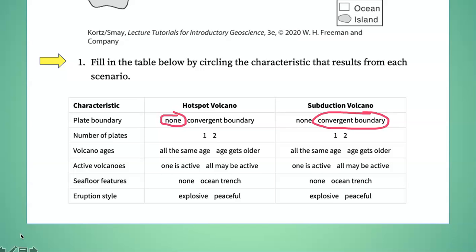Number of plates. Well, if there's no boundary in a hot spot volcano location, then you only have one plate. And of course, convergent boundaries involve two plates.